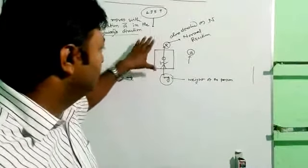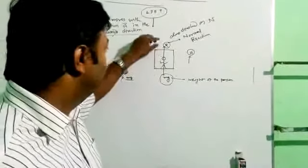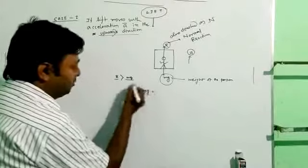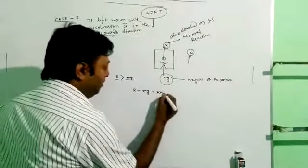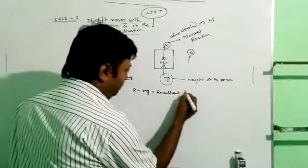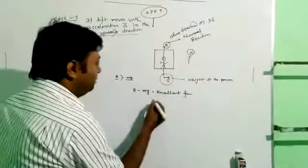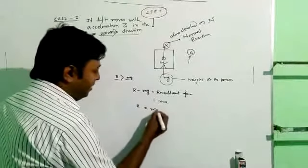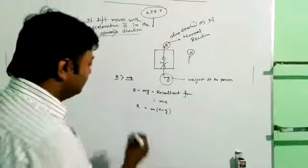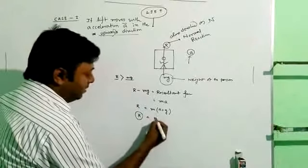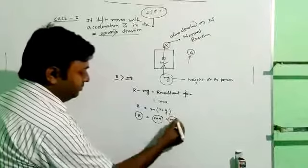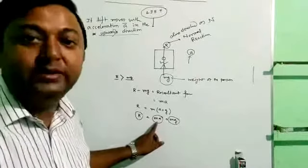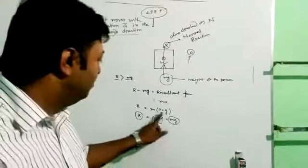If we calculate the equation of motion, then R minus Mg equals Ma, which is Newton's second law of motion. That means R equals M times (A plus G). From this, we conclude that R increases by an amount of Ma from Mg. That means your apparent weight increases by an amount Ma compared to your actual weight.